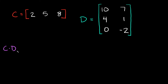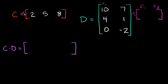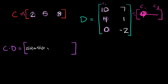So again, if I want to multiply C times D, we can do that. Remember, it's going to be a one by two — so one row, two columns. You start with row one and column one — just go down the row, down the column. So we're going to do two times 10, and then add that to five times four, and then add that to the last one, eight times zero.